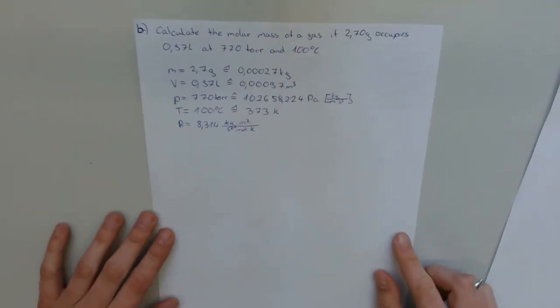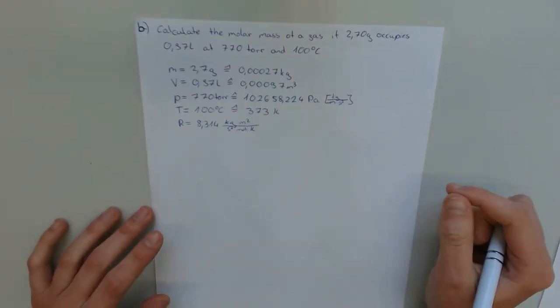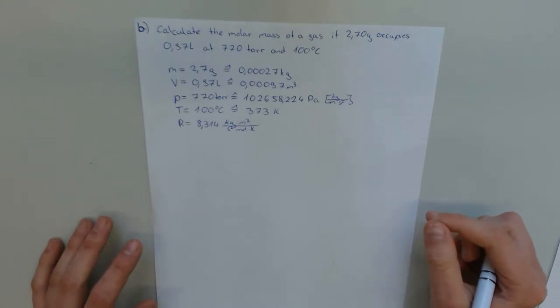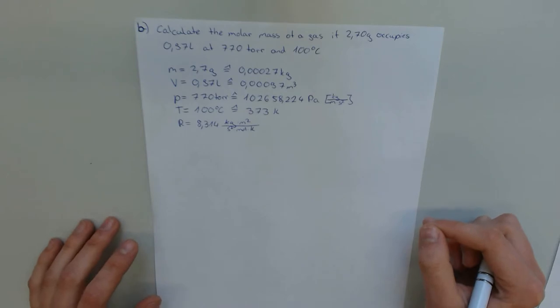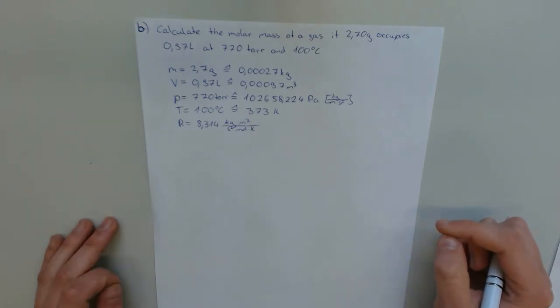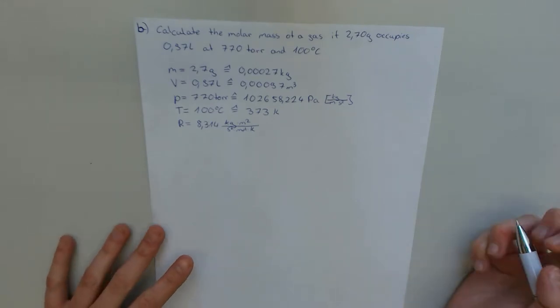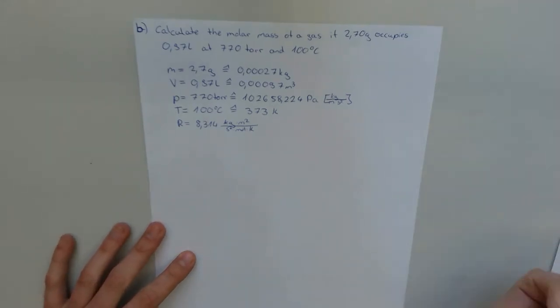Now we got task B which is to calculate the molar mass of a gas if 2.7 gram occupies 0.97 liters at 770 torr and 100 degree Celsius. So, we got the things we got given we transfer into SI units again.